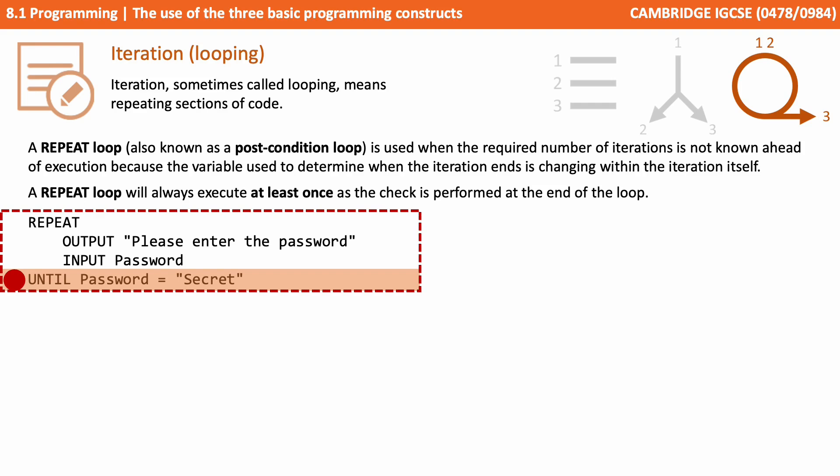Next we have what's called a repeat loop, also known as a post-condition loop. Now this is used when the required number of iterations is not known ahead of execution, and that's because the variable used to determine when the iteration ends is changing within the iteration itself. A repeat loop will always execute the code at least once as the check to exit the loop is performed at the end. So here we've got 'repeat' and then we output to the screen 'please enter the password.' We then wait for the user to input the password. We then hit the end of the repeat loop and it says 'until password equals secret.' So if they haven't entered 'secret,' that statement's not been met, it's not true, so we go back to the top of the repeat loop and we do it again and again. And we keep repeating it an indeterminate number of times until that condition at the end is met.